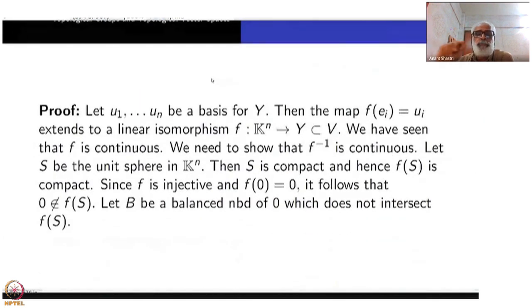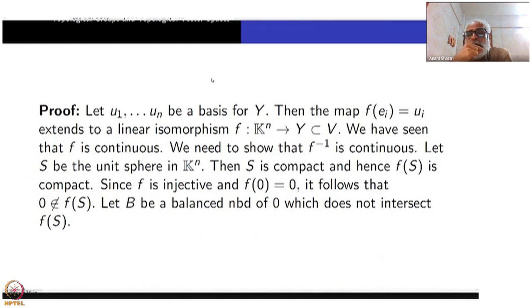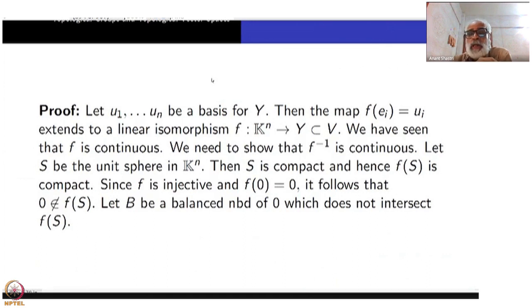Here is the proof. Start with a basis for Y, say u_1 through u_n. Then the map f sending e_i to u_i extends linearly to an isomorphism from K^n to Y. The linear part is done. We have already seen in the last corollary of the previous module that any linear map is continuous.